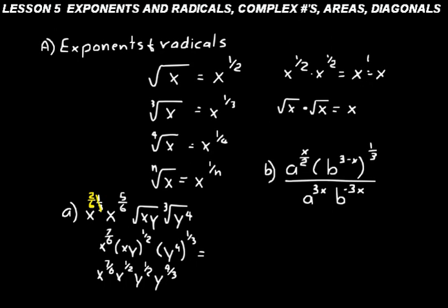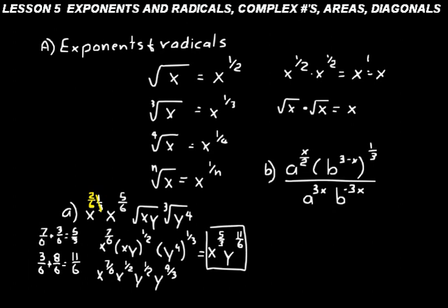Now we can simplify the two x terms and the two y terms by adding their exponents. For the x terms: seven-sixths plus one-half is seven-sixths plus three-sixths, which is ten-sixths or five over three. So we have x to the five-thirds. For the y terms: y to the one-half plus y to the four-thirds — common denominator is six — gives us three over six plus eight over six, which is eleven over six. So the final simplification is x to the five-thirds times y to the eleven-sixth power.